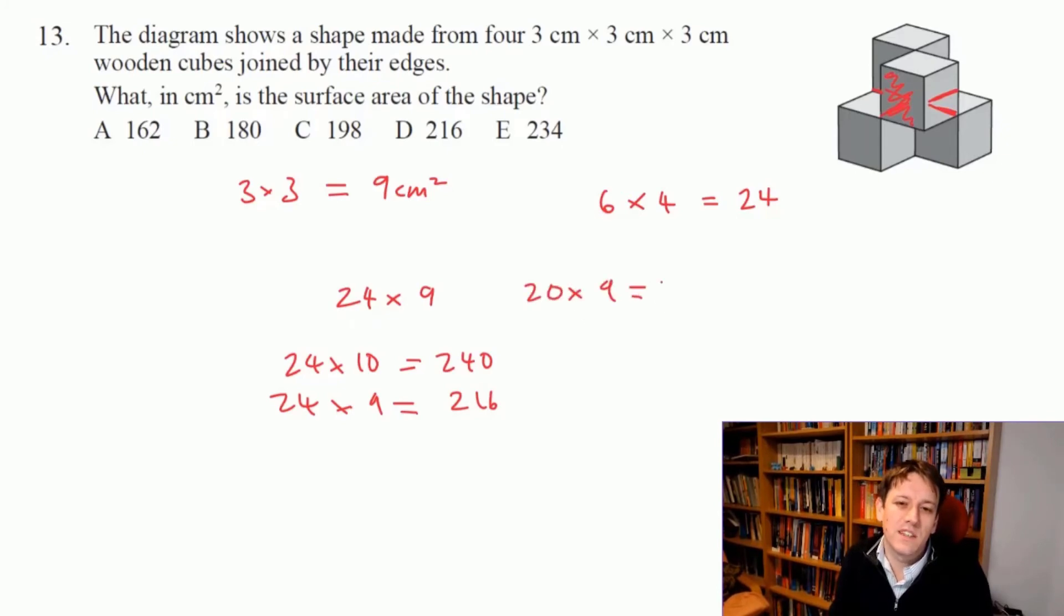Or you could do something like 20 times 9 is 180, 4 times 9 is 36, and add them together to get 216 as well, or just do an ordinary multiplication. Either way the answer is D, 216.